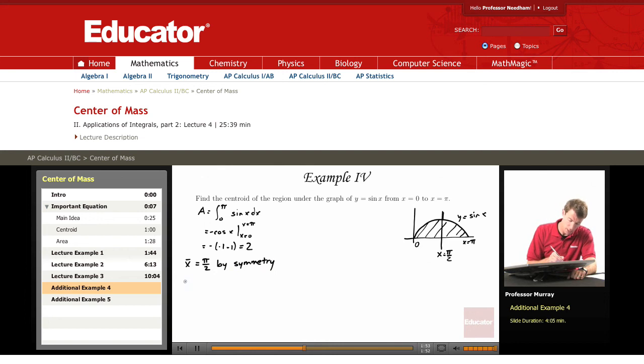Instead, we're going to look at the y coordinate of the centroid. And our formula that we have is 1 over 2 times the area, integral from a to b, of f of x squared dx. So that's 1 over 2 times the area. Well, the area we figured out was 2. So this is 1 over 4 times the integral from 0 to pi of sine squared of x dx.